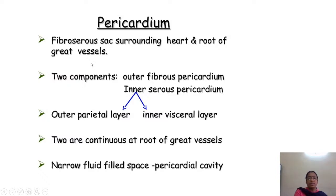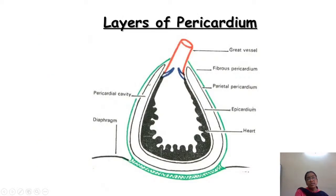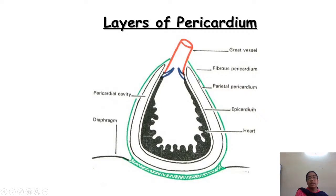The pericardium has two components: outer fibrous pericardium and inner serous pericardium. In the diagram, the green color indicates the outer fibrous pericardium. The black color indicates the inner serous pericardium, which is again divided into two layers — making it a double-layered structure.